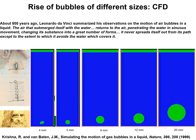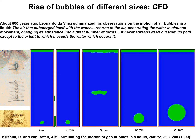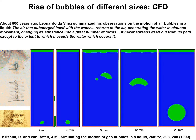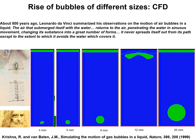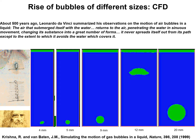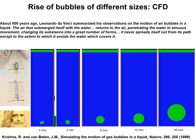A nine millimeter bubble appears to be flapping its wings and is unstable and breaks up. A twelve millimeter bubble has the motion of a bird flapping its wings as it rises through the liquid.